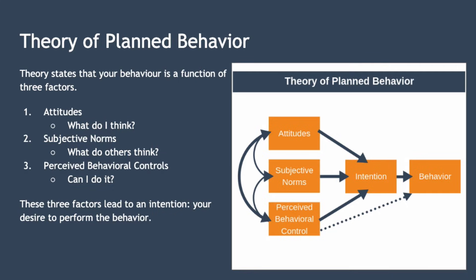Next, we have perceived behavioural controls. These look at whether you believe you have the tools or the means required to exhibit the behaviour. For example, if you think that you're not clever enough to take the course, then you're obviously going to be less likely to take it. Similarly, if you believe that you can't afford the course, then you'll be less likely to sign up for it. In short, perceived behavioural controls answer the question: can I do it?